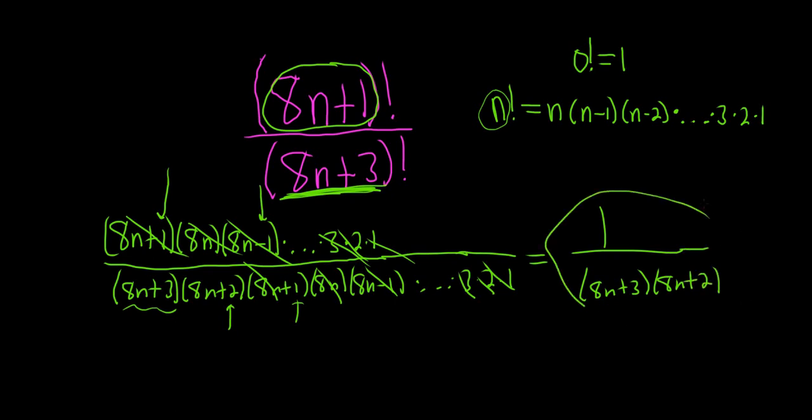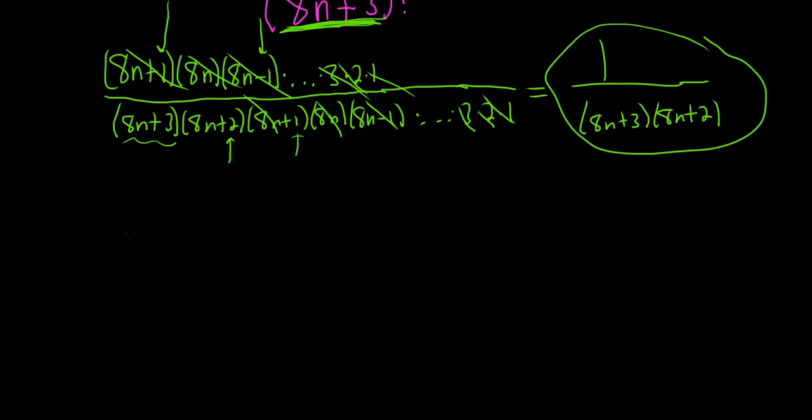So that's one way to do it. This is probably not the way I would do it if I was approaching this problem. So let me show you how I would do it. Let me just scroll down and show you another solution. So we have 8n plus 1 over 8n plus 3 factorial. And so the way I would do it is I would notice that the numerator is pretty much contained in the denominator. So watch this.